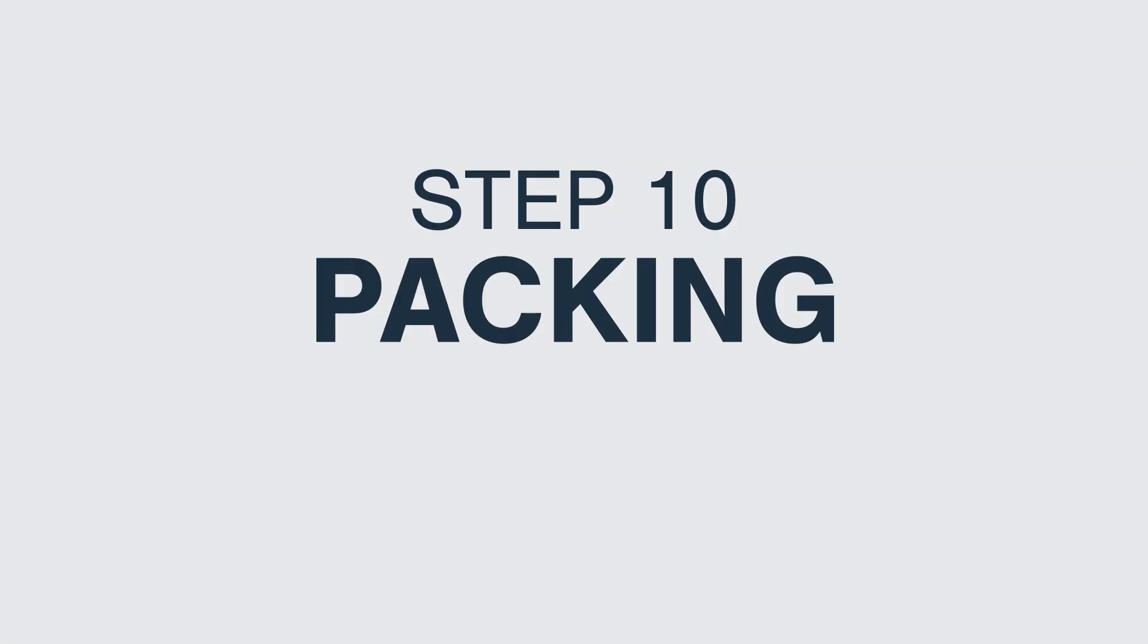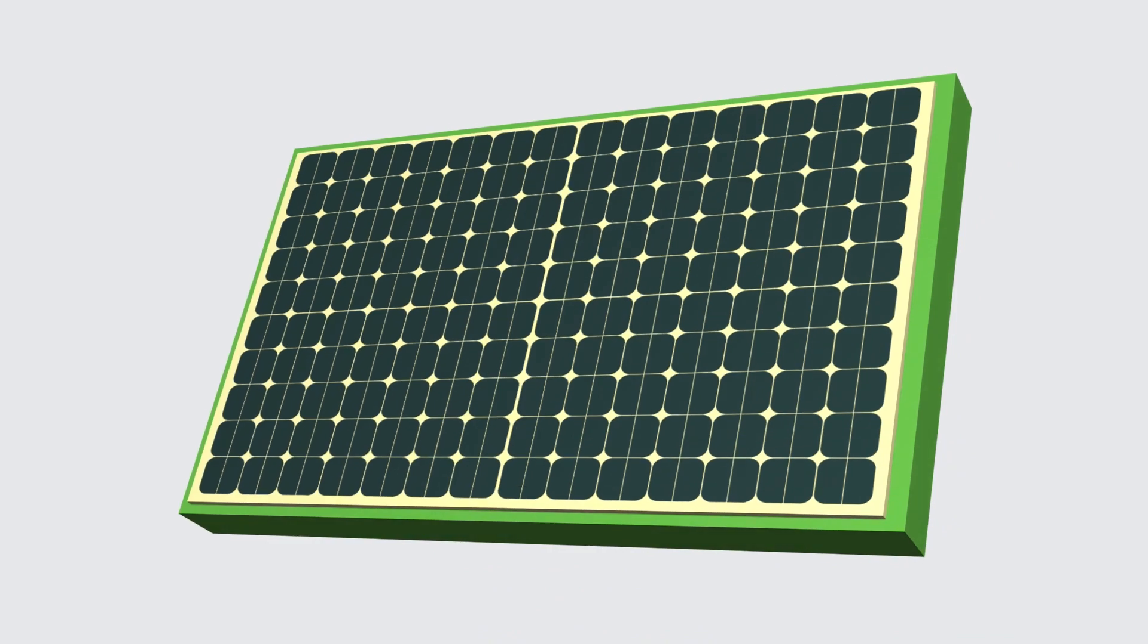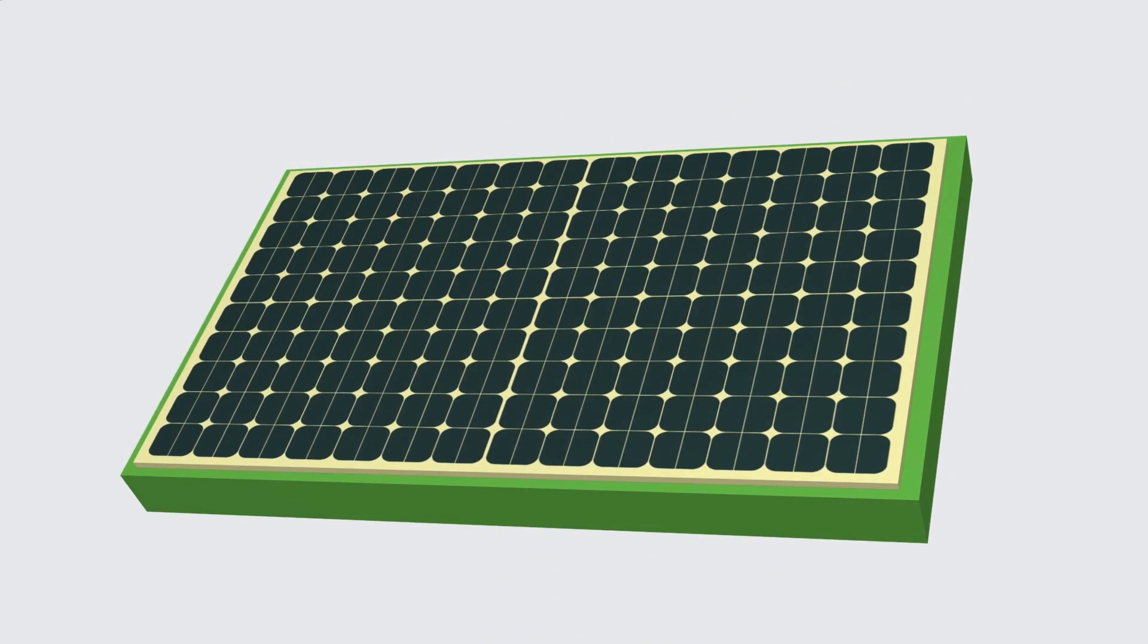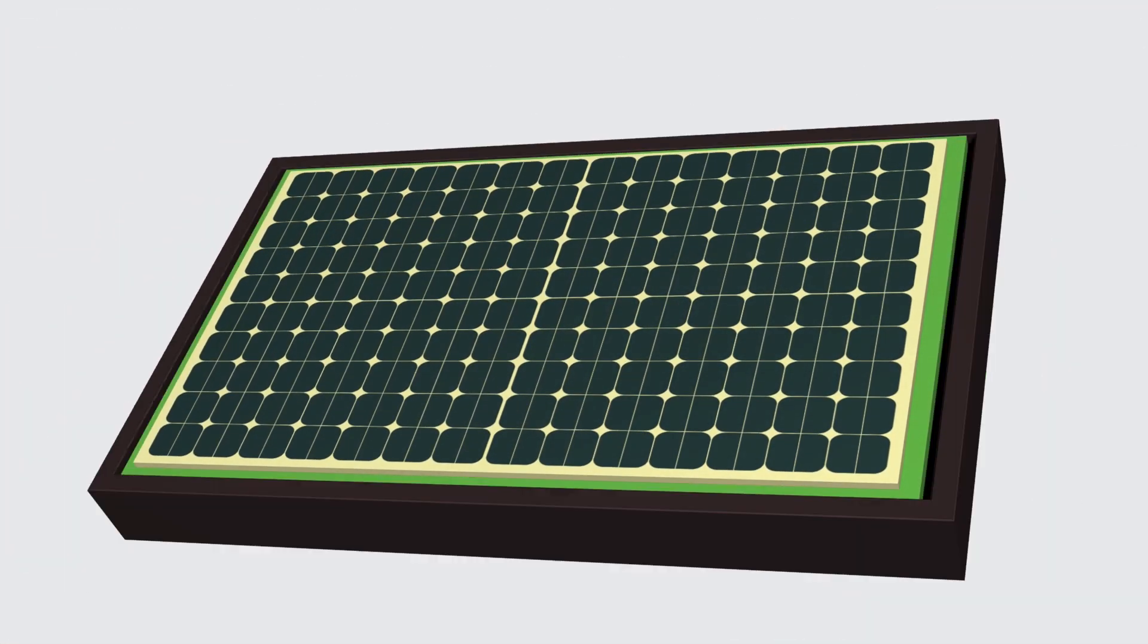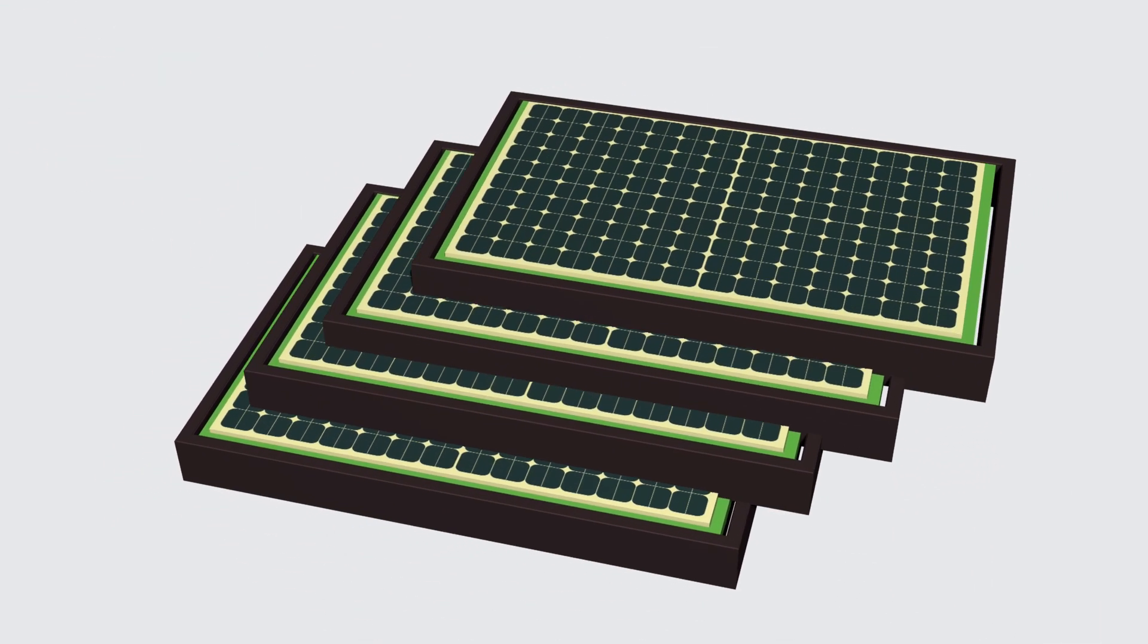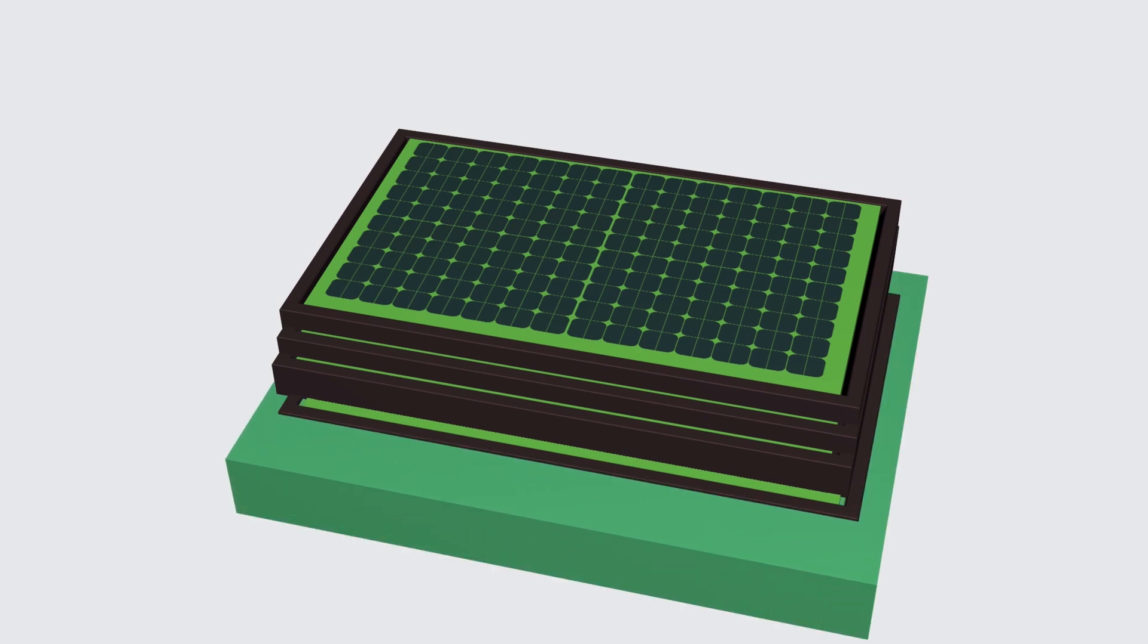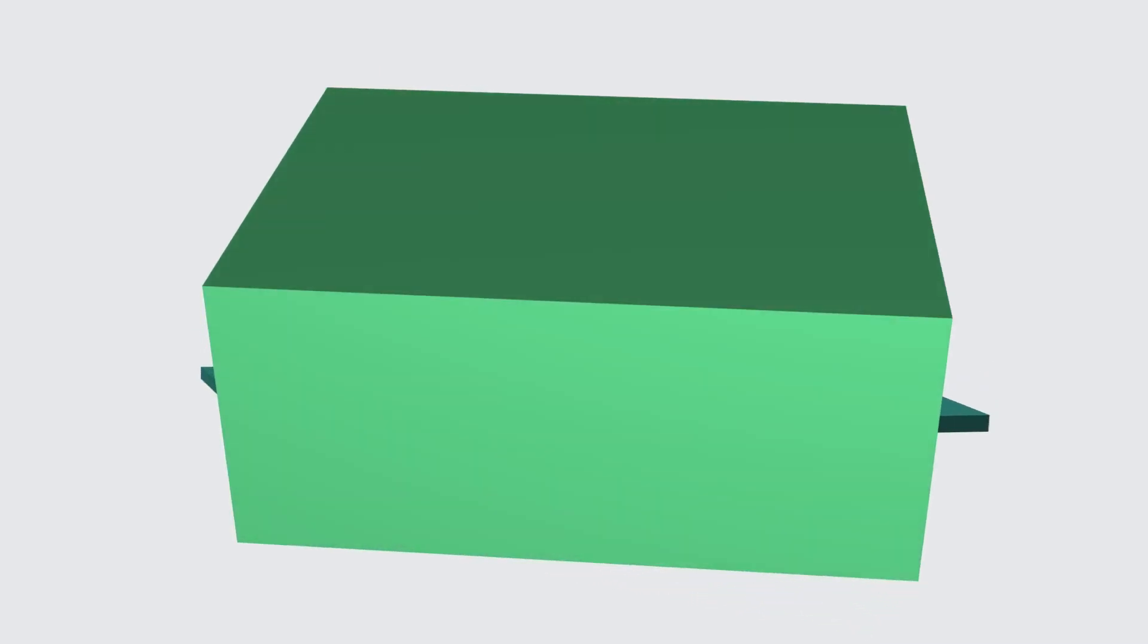Step 10. Packaging. After three final quality inspections, the staff will start packing the PV modules. In addition to packaging in cartons, the four edges of each module will be wrapped in cardboard to prevent accident during transportation. After the packaging is completed, a film will be wrapped on the outside of the carton to better insulate air and moisture.